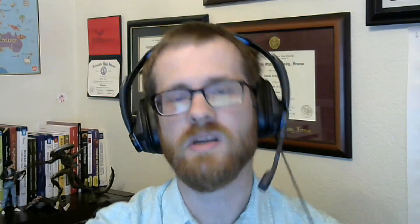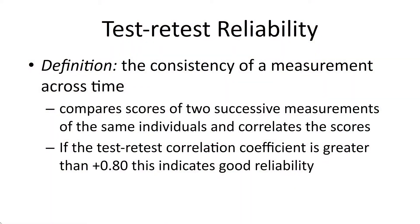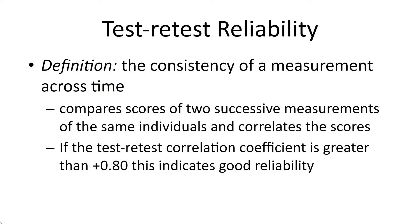When it comes to assessing reliability, one of the more common methods is test-retest reliability, which measures the consistency of your measurement across time. For example, you step on a bathroom scale and question whether the number is accurate. So you step off, wait a moment, and step back on again — and it gives you the exact same number. You've just used test-retest reliability. You're comparing the scores of successive measurements of the same individual on the same variable.